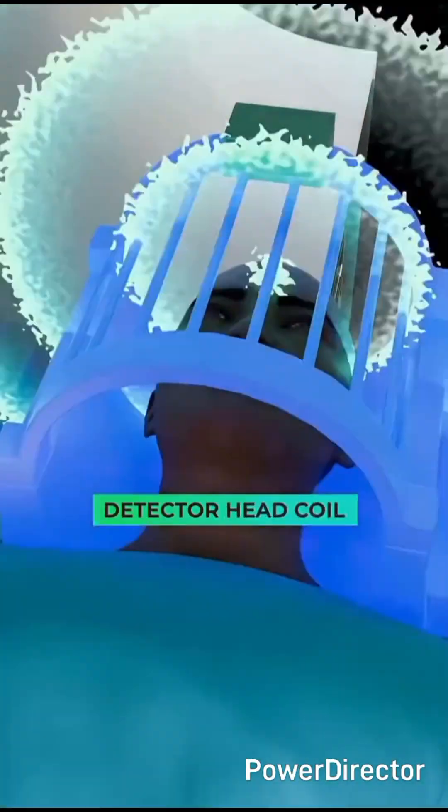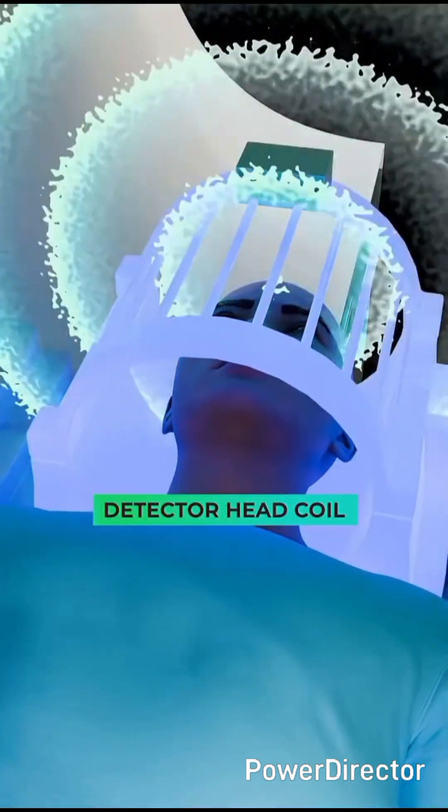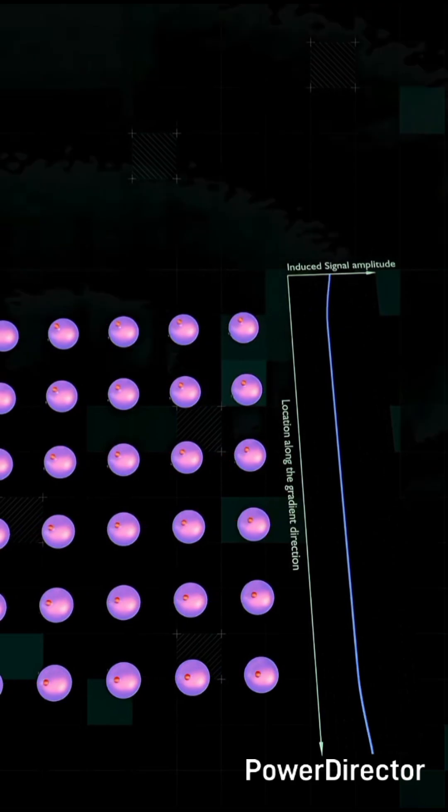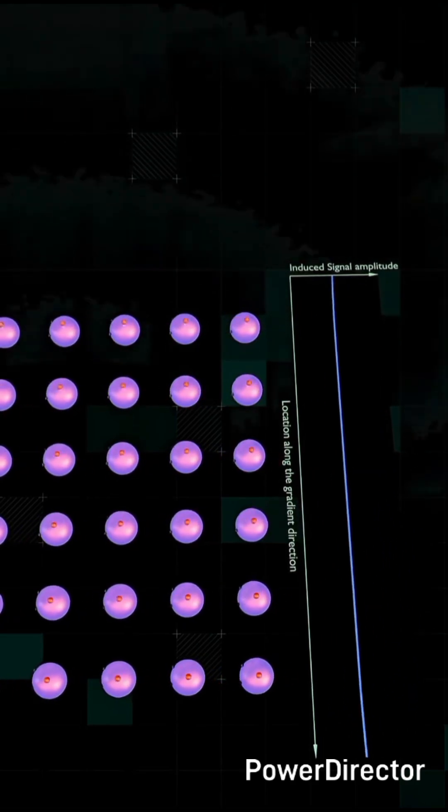At this moment, detector coils placed near the body pick up the collective wobble as an oscillating signal. But by itself, this signal is just one big noise.